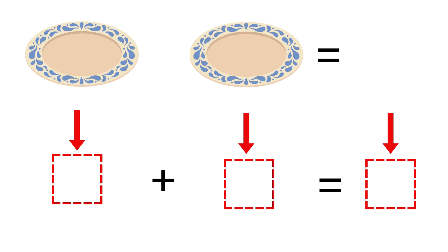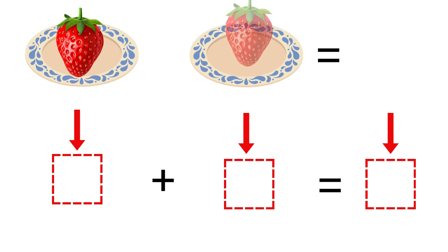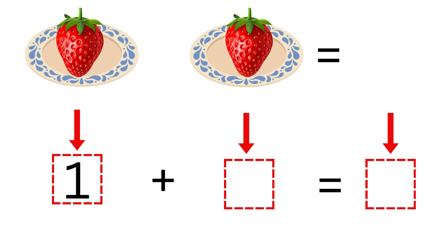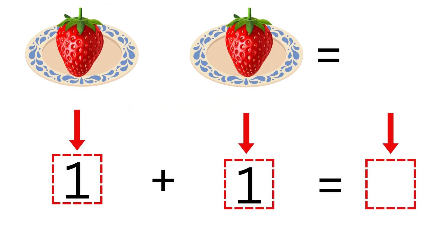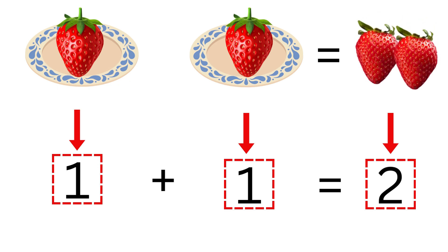Now, look at these two empty plates. In the first plate, I am putting one strawberry. And on the second plate, I am putting one strawberry. How many strawberries are there in total? Let's count: one, two. In total, we have two strawberries. Which means one plus one is equal to two.